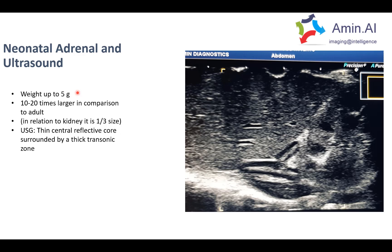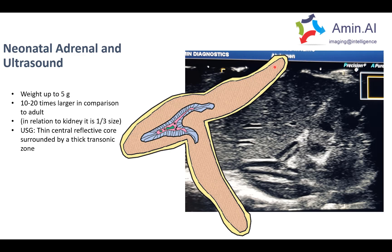In neonates, we can utilize ultrasound for imaging of the adrenal gland. Focusing on the image, this is the kidney, and just above the kidney you can see a triangular structure which has a central echogenic part representing the central part of the gland, surrounded by a hypoechoic or transonic zone. You can easily image the adrenal gland using ultrasound in a neonatal patient.